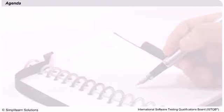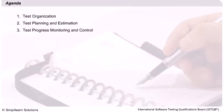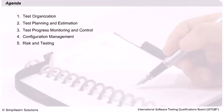Let us now look at the agenda for this session. The whole session is divided into six parts: 1. Test Organisation, 2. Test Planning and Estimation, 3. Test Progress Monitoring and Control, 4. Configuration Management, 5. Risk and Testing, 6. Incident Management.